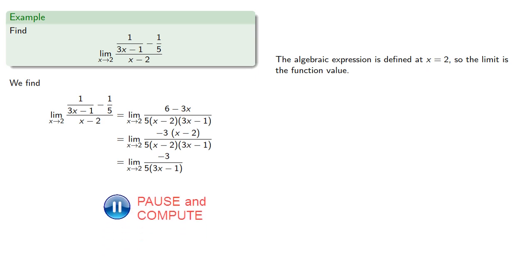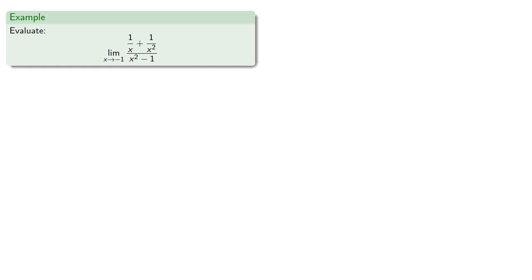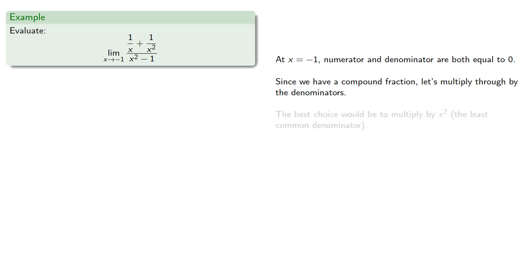Let's find this limit. At x equals negative 1, the numerator and denominator are both equal to 0, and since we have a compound fraction, let's multiply through by the denominators. Now the best choice would be to multiply by x squared, which is the least common denominator.